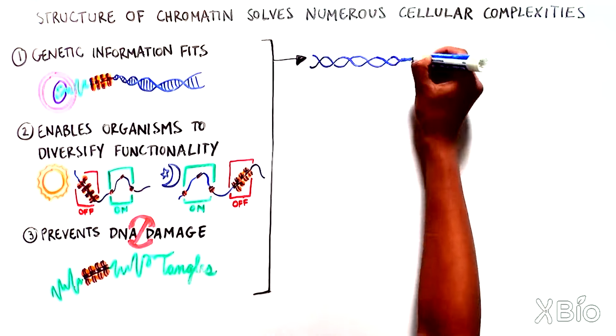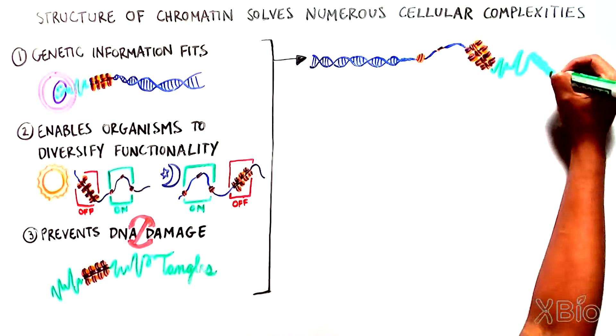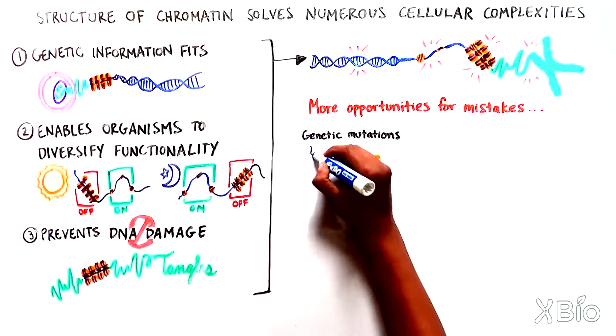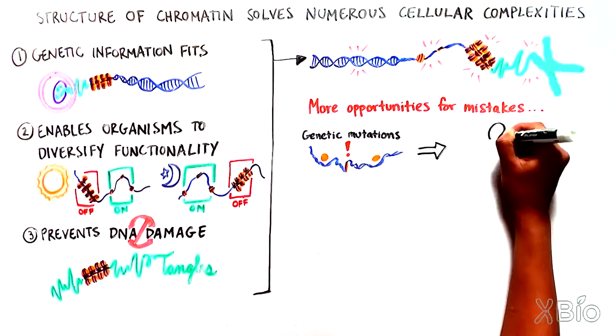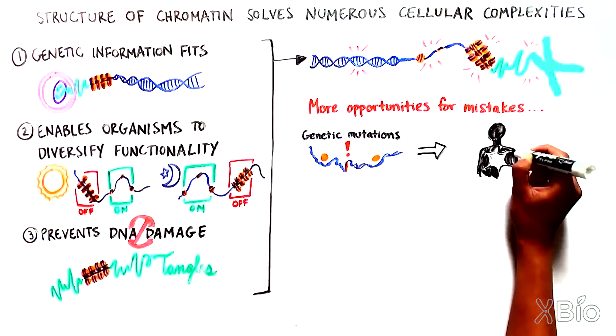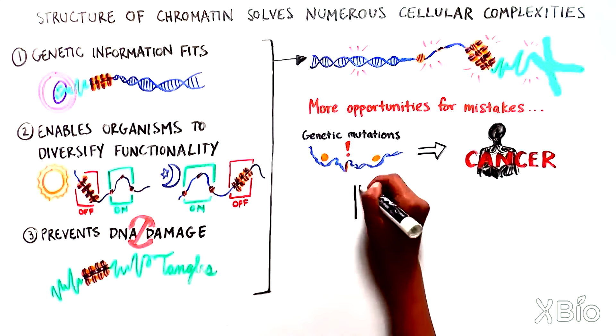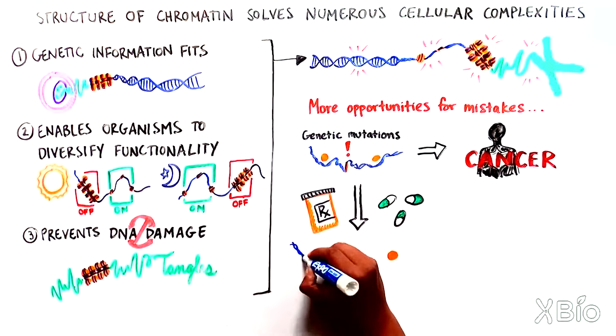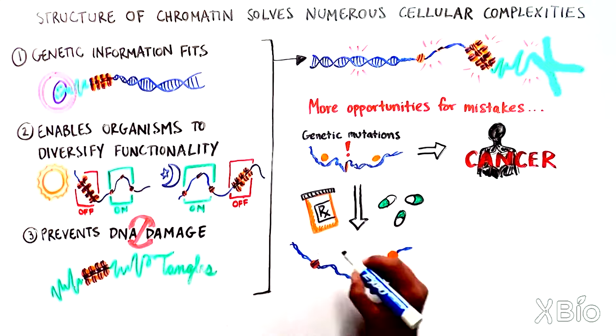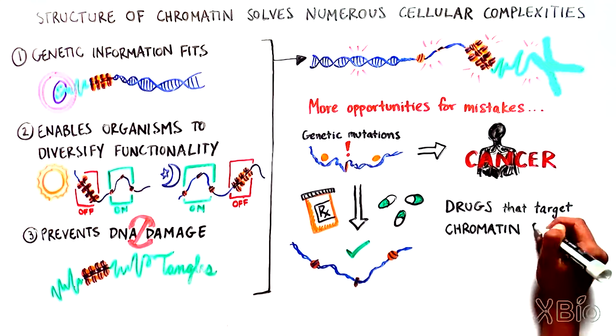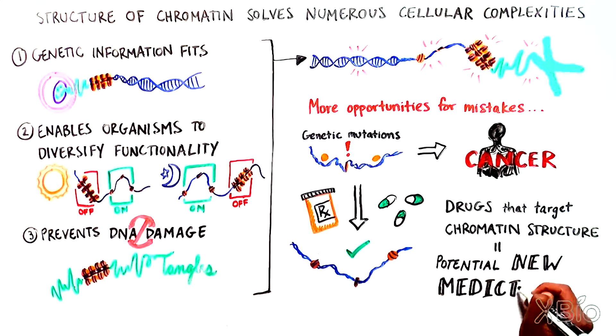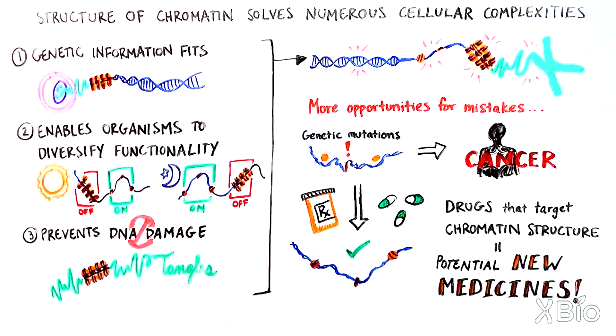More levels of biological intricacy, however, also means more opportunities for mistakes to happen. Researchers are finding that genetic mutations affecting chromatin structure are common in many types of diseases, especially cancer. While scientists are still trying to uncover the precise roles these mutations play in diseases, efforts to develop drugs that target chromatin machinery have shown promise in early clinical studies, revealing their potential to provide a new type of medicine for challenging health problems.